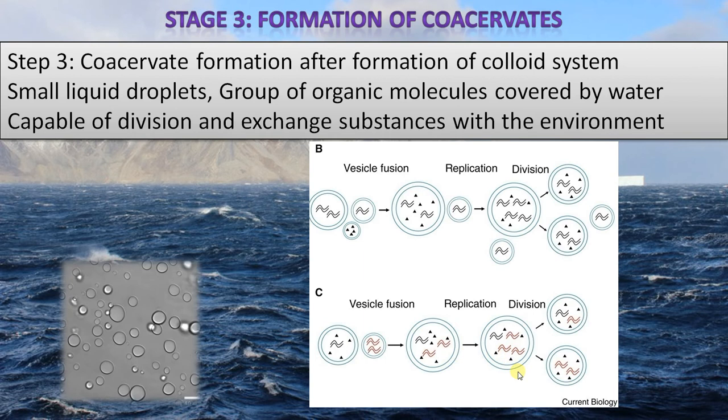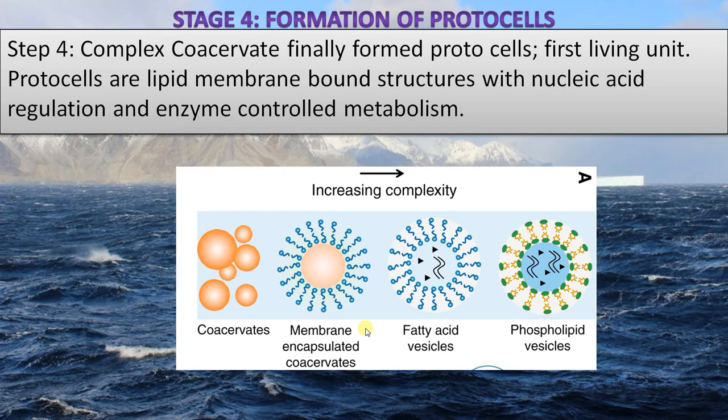Step four is the formation of the protocell. The coacervate gradually evolved, becoming more and more complex. First, a lipid membrane formed; within it, a nucleic acid regulation mechanism developed; then proteins controlled the metabolism as enzymes. This formed the protocell — a phospholipid vesicle with nucleic acid-controlled regulation and enzyme-controlled metabolism. The coacervate gradually increased its complexity, finally forming the protocell, the ancestor of all present-day life forms.